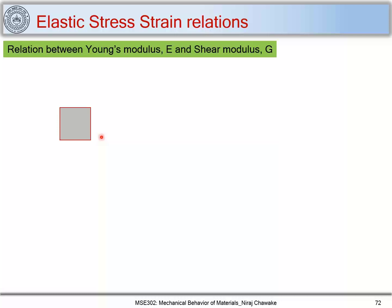To do that, let us consider an element and mark our coordinate axis, and define a stress state where sigma_xx is a tensile stress acting on the x plane and sigma_yy is a compressive stress acting on the y plane. I consider sigma_xx to be sigma and sigma_yy to be minus sigma.